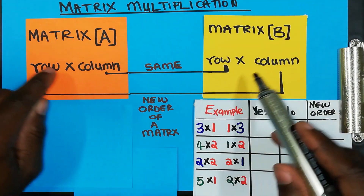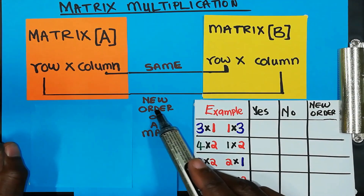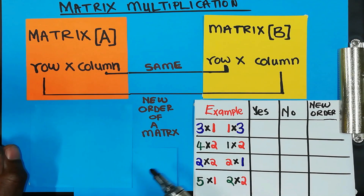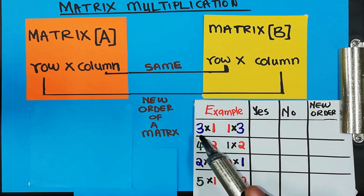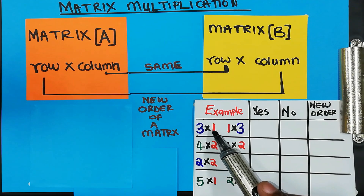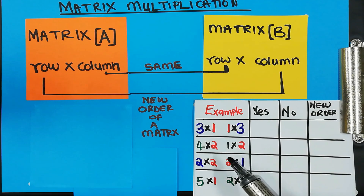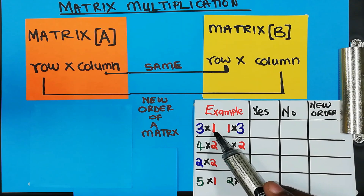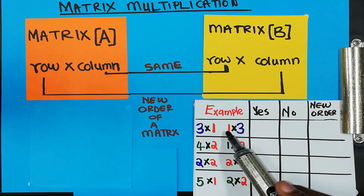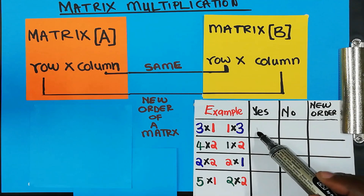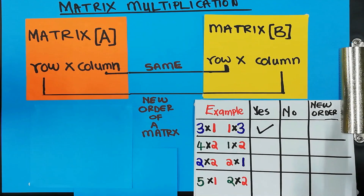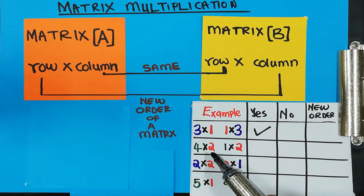Let's make sense out of that. Here I have a 3 by 1 matrix and a 1 by 3 matrix. These two numbers in the middle are the same, so it means I can continue with matrix multiplication.